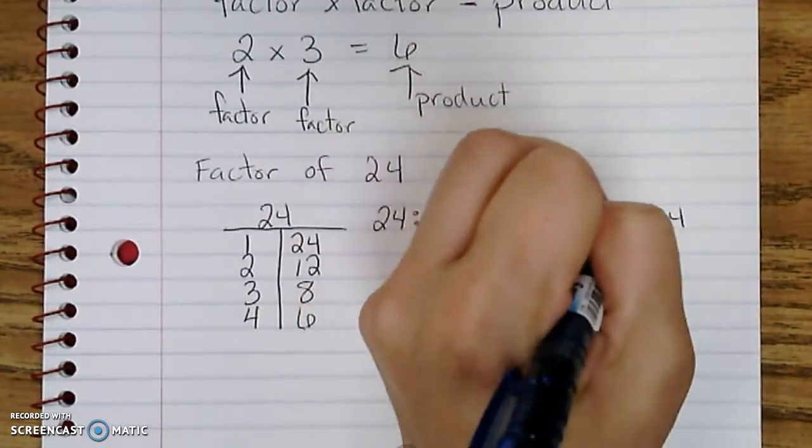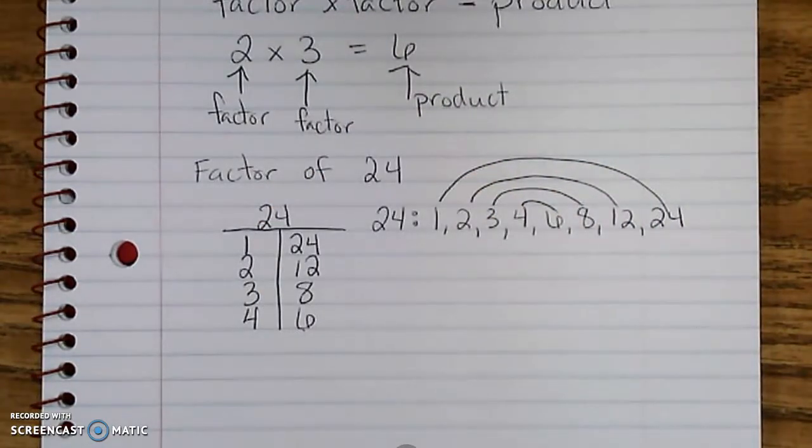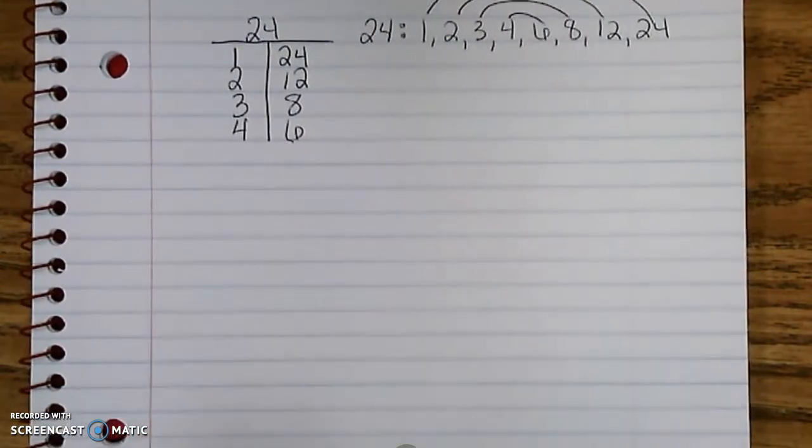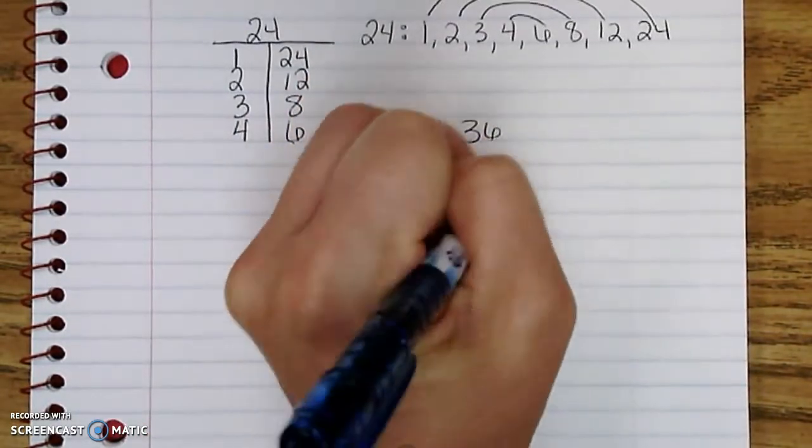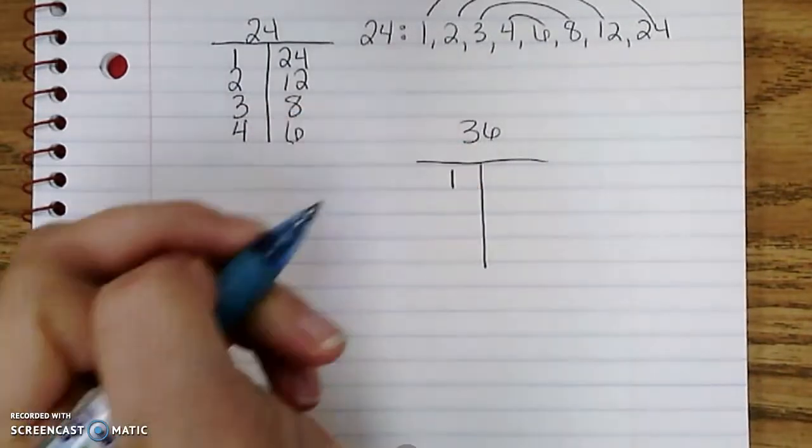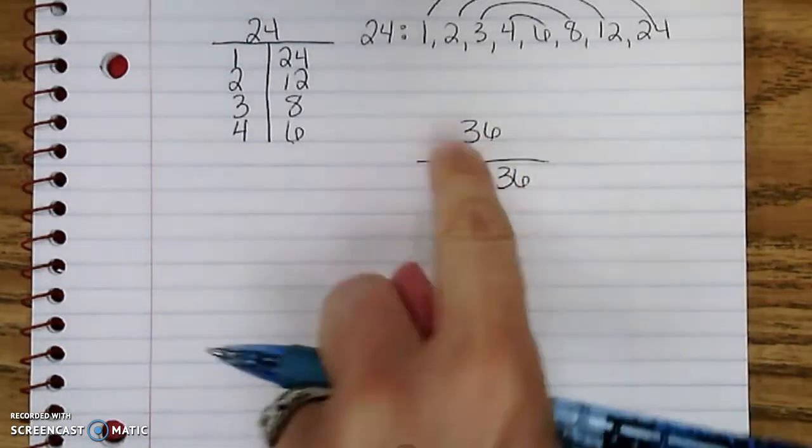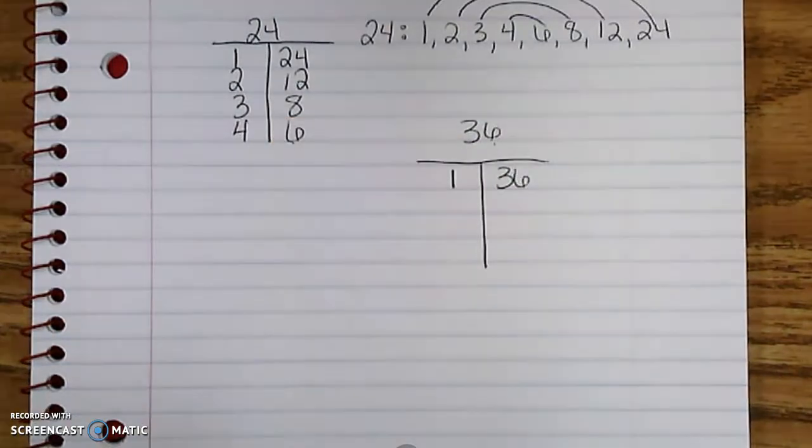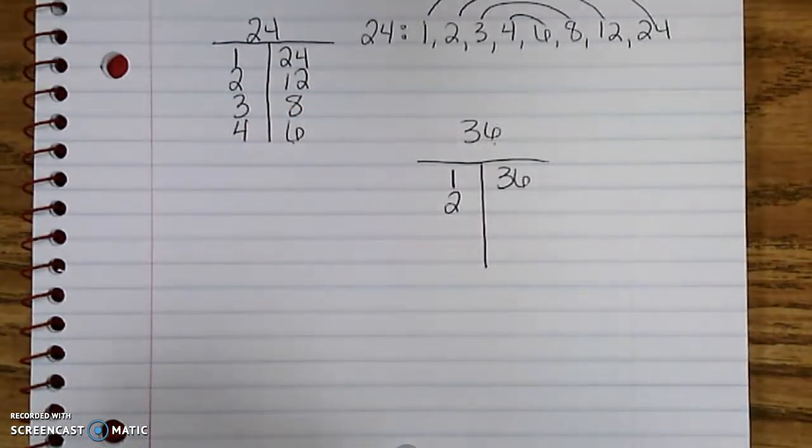Let's try one more. Let's try 36. So let's make a t-chart for 36. Always, 1 is always a factor and itself. Is 2 a factor of 36? Well, 36 is an even number, so anytime I have an even number I know that one of the factors is 2.